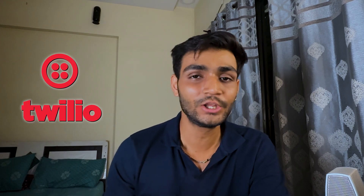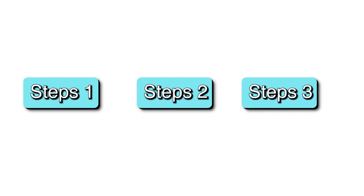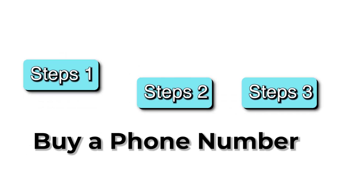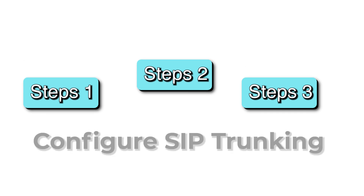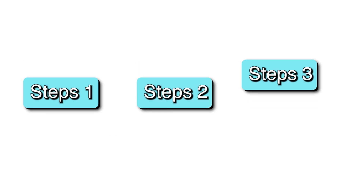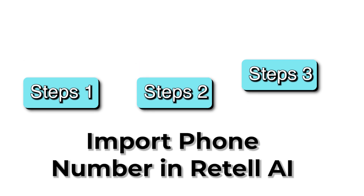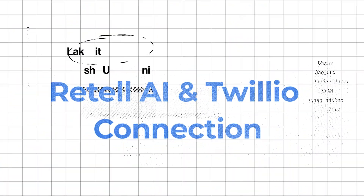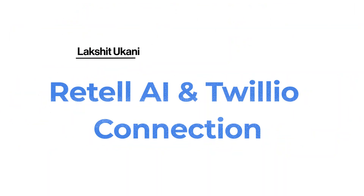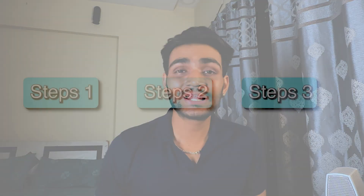SIP trunking is nothing but getting your number from a third-party application like Twilio and connecting it here. Today's video will break down into three steps: first, buy a phone number; second, configure the SIP trunking; and third, import the phone number into Retell AI. Let's get started.